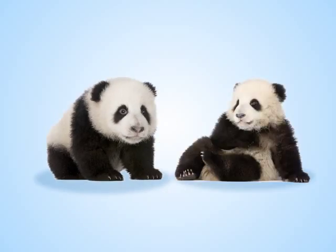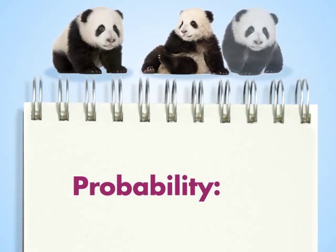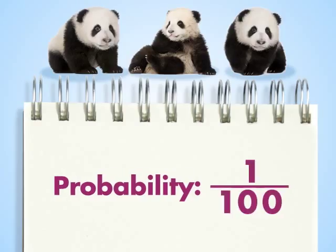For example, panda twins are pretty common — about 1 in 2 births results in a set of twins. But panda triplets are much more rare; triplets occur in only 1 in 100 births. You can use probabilities like these to make predictions about future events.